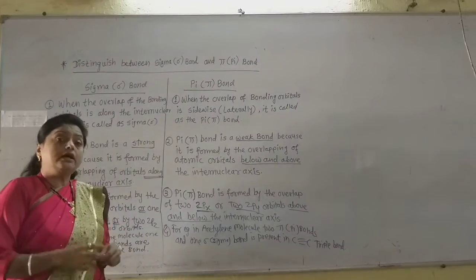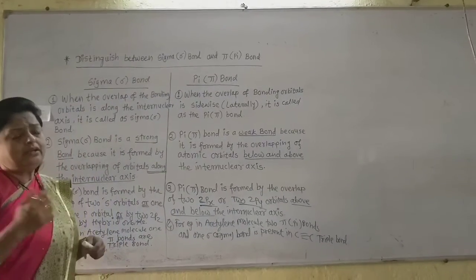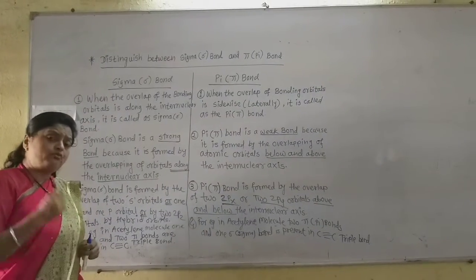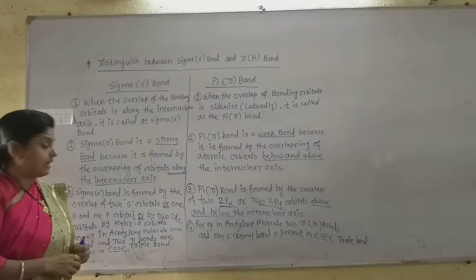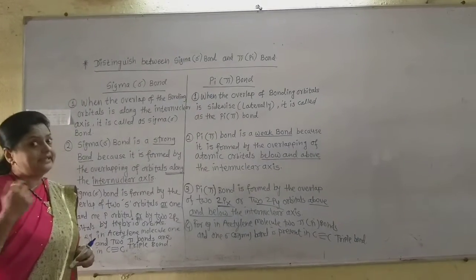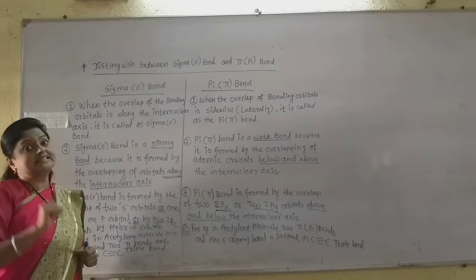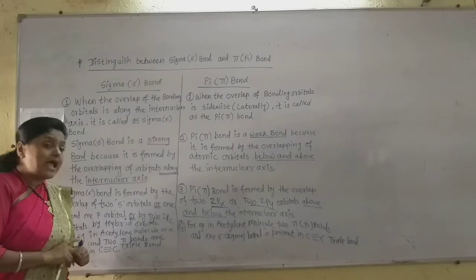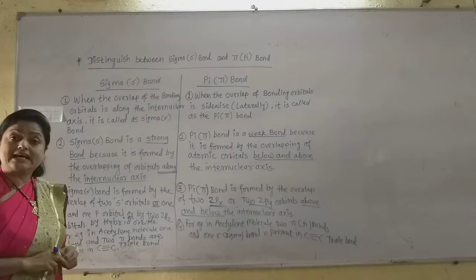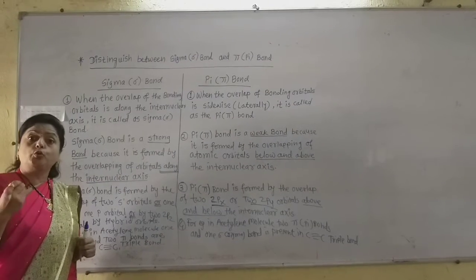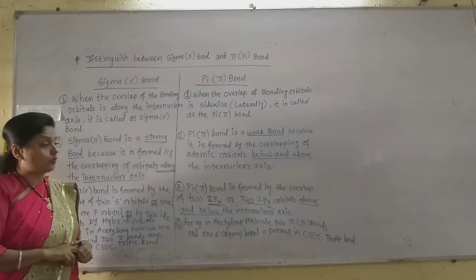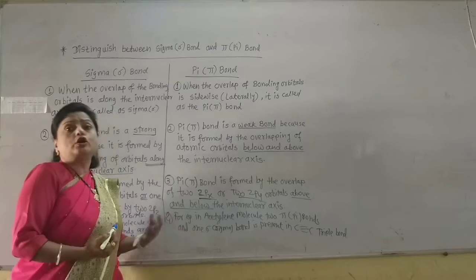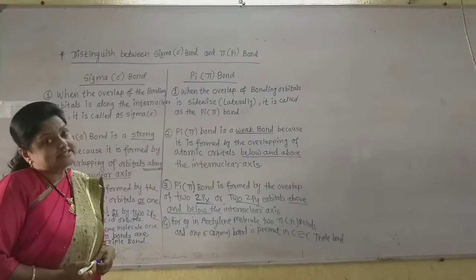These p orbitals are not on the inter-nuclear axis. In the acetylene molecule, there is a triple bond. Out of those three bonds, one is a sigma bond — formed by the hybrid orbitals of the two carbon atoms — and two are pi bonds, formed by the overlap of 2px–2px and 2py–2py orbitals. So in acetylene, there are two pi bonds and one sigma bond.